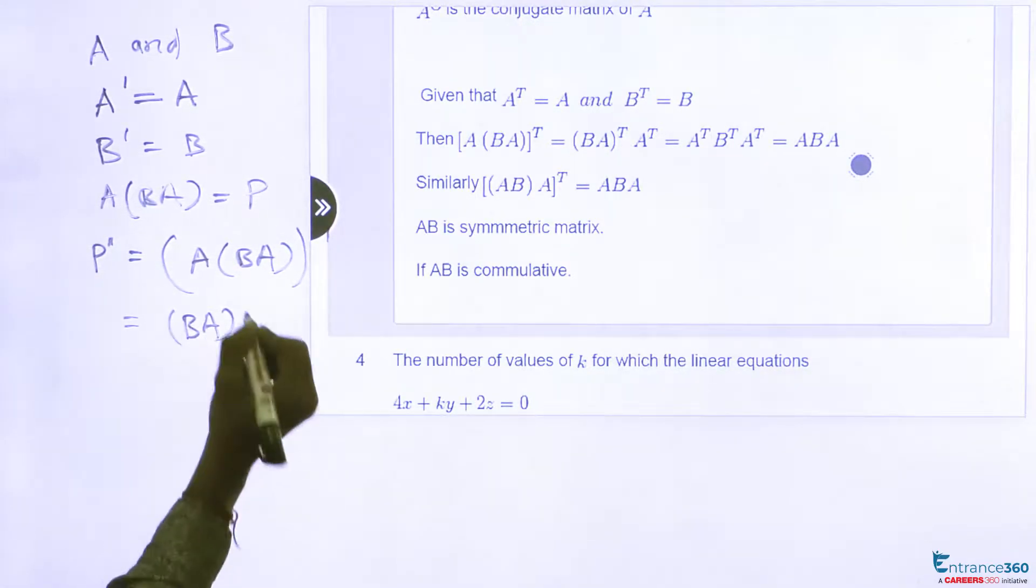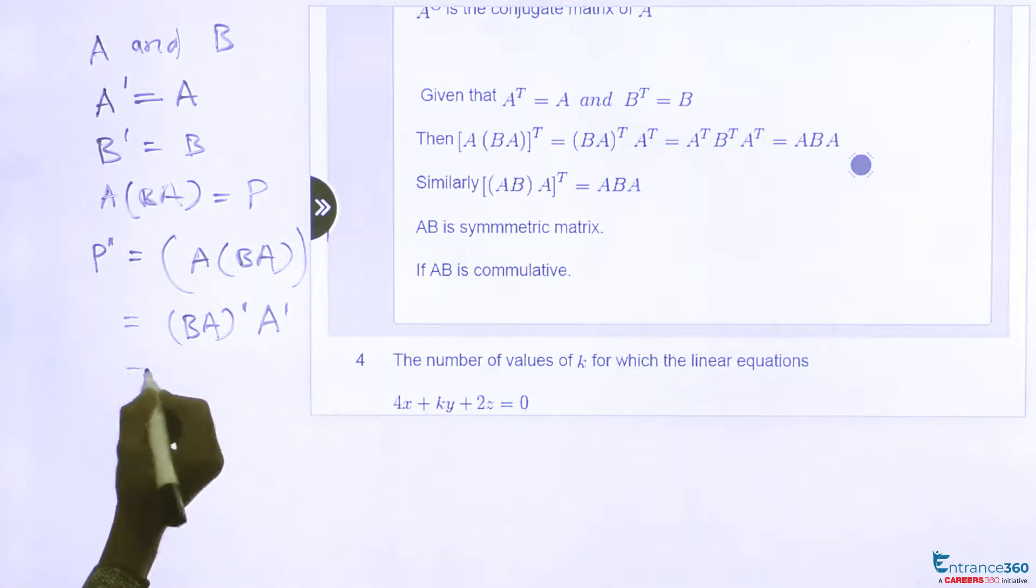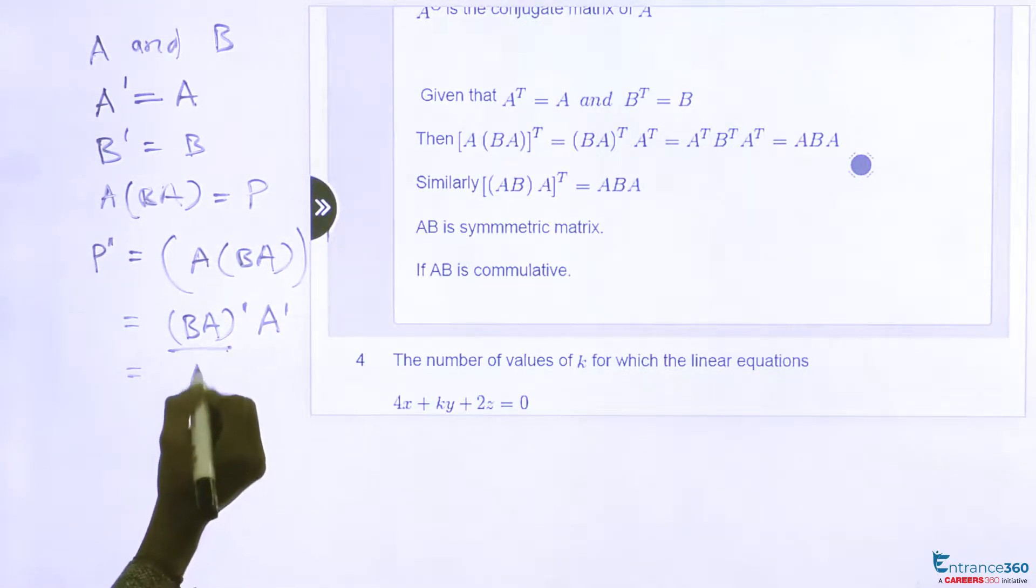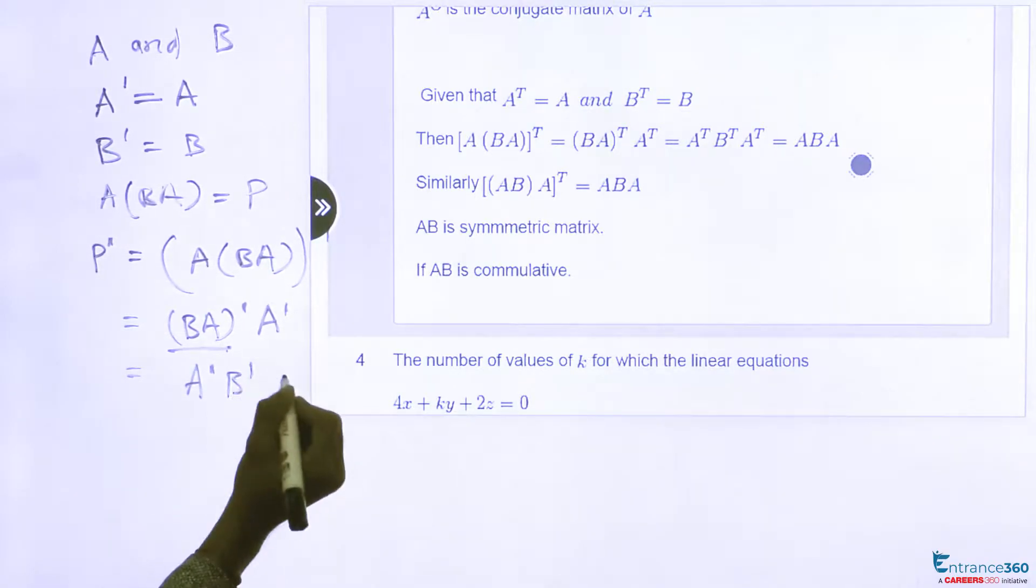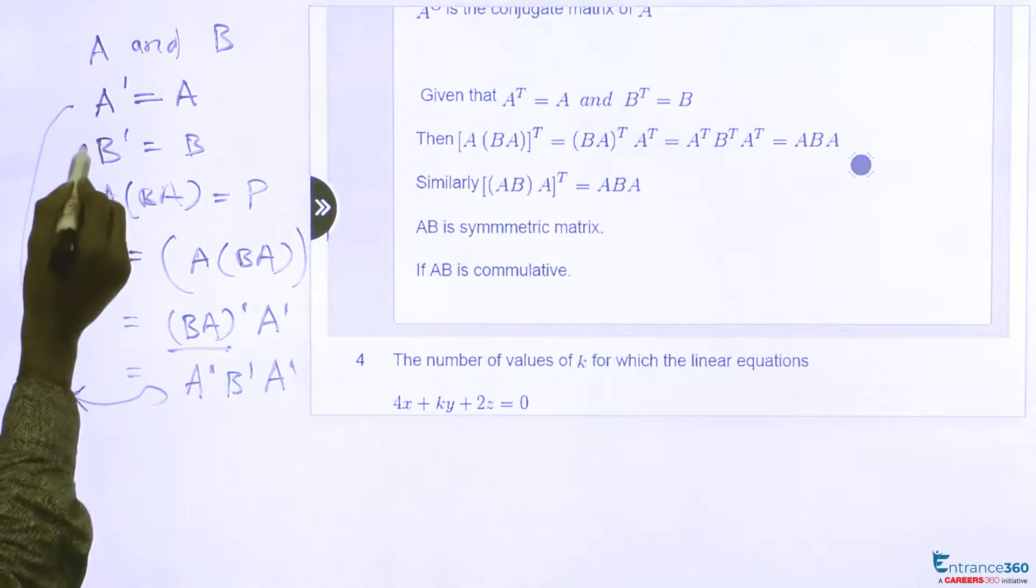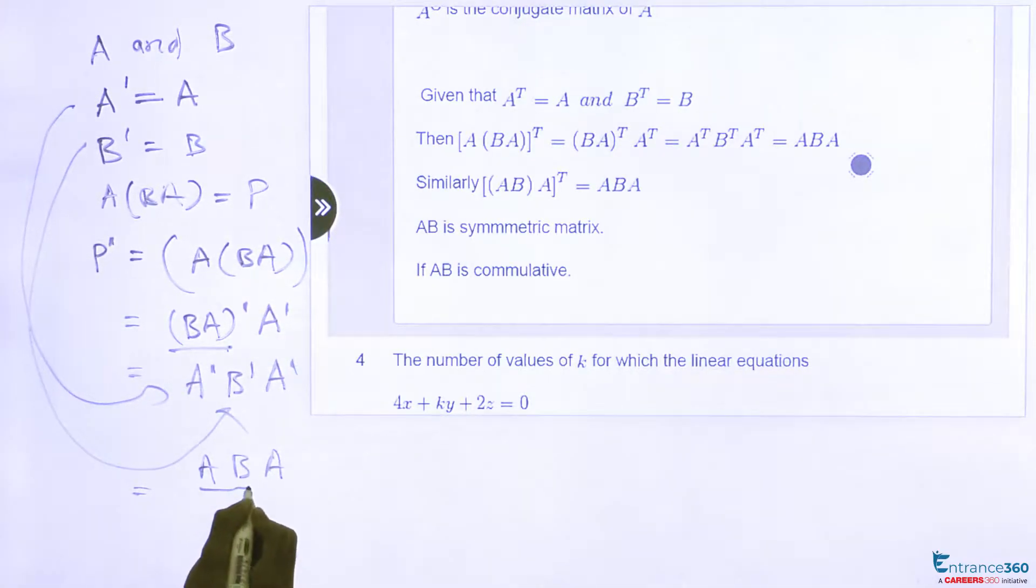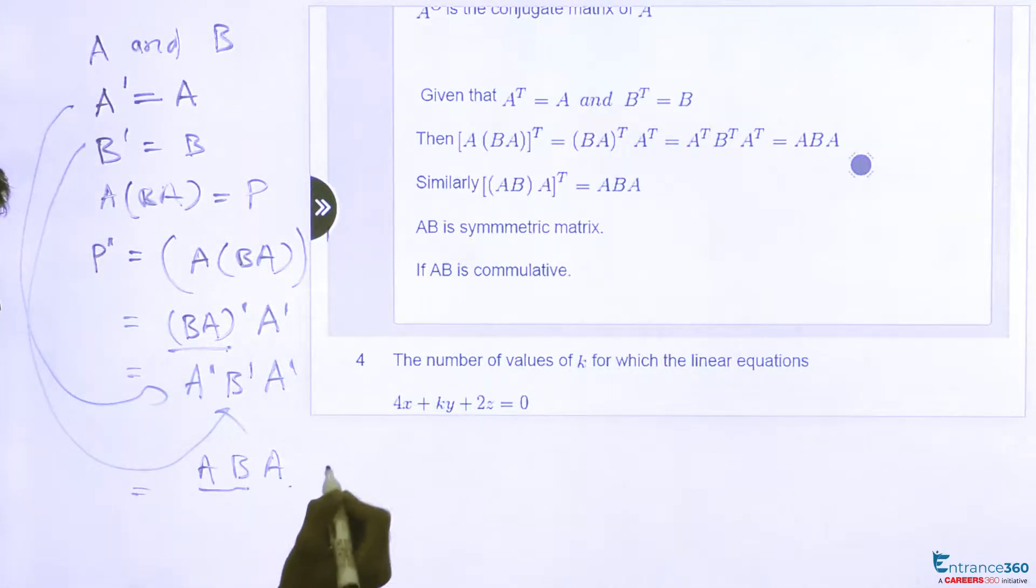then this will be (BA)^T A^T. Then again opening this bracket, this will be A^T B^T A^T. Using this, this will be ABA. We can multiply this A, B and A using associative law.